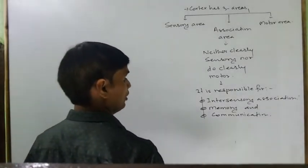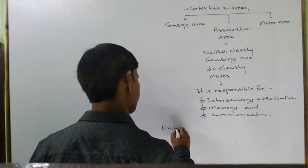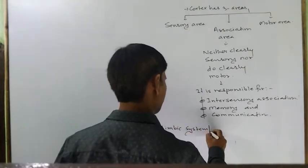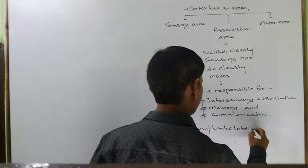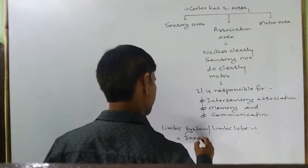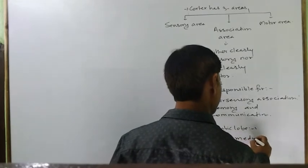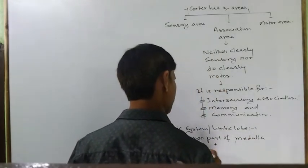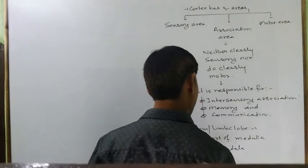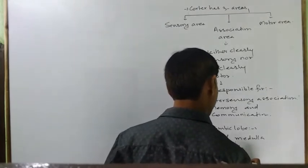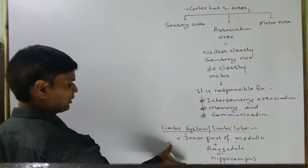इसके बाद एक और जानते हैं Limbic System या Limbic Lobe के बारे में। यह Inner Part of Medulla, plus Hippocampus, plus Amygdala — यह तीनों मिलकर Limbic System या Limbic Lobe बनाते हैं।